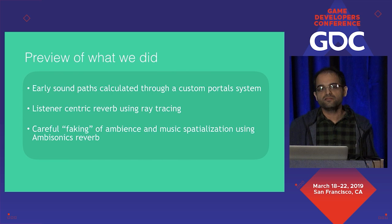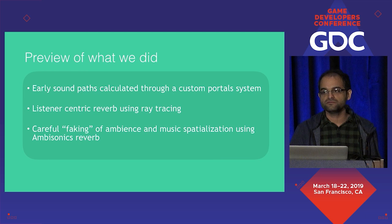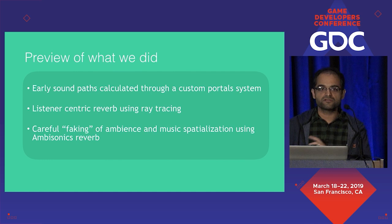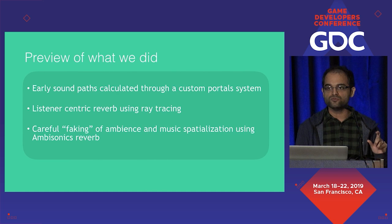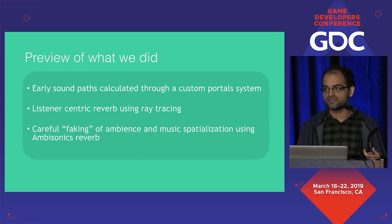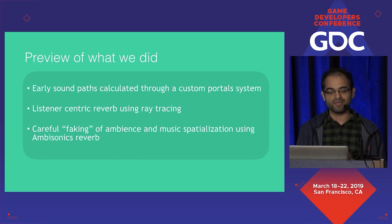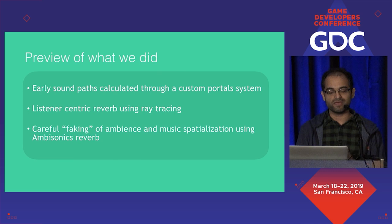For the next few minutes I'm going to talk about some of the things we had to do to get spatial audio working well in Budget Cuts. I won't be talking about HRTFs or occlusion because in 2019 that's not as much of a problem as it used to be. I'm going to focus on sound propagation. Here's a quick overview of what we did: we split sound propagation into per-source early reflections and a single physics-based reverb. The early sound paths for every source were guided using a custom portaling system. And we faked some spatialization for ambience and music using the Steam Audio Ambisonics Reverb system.